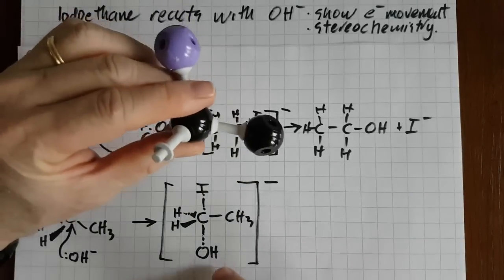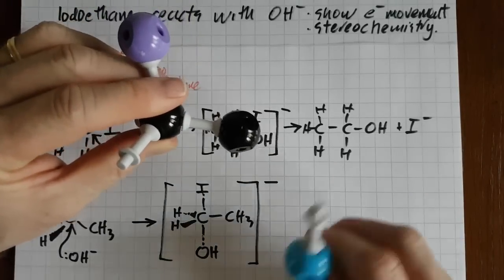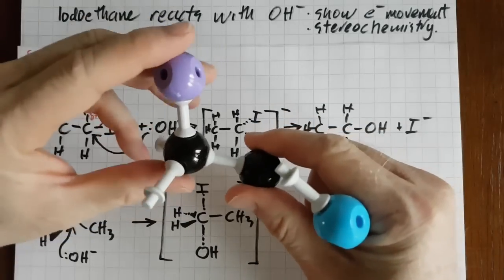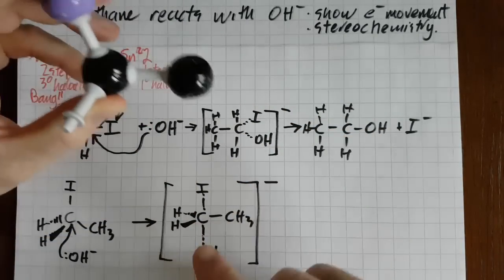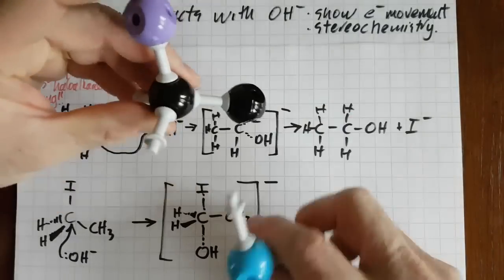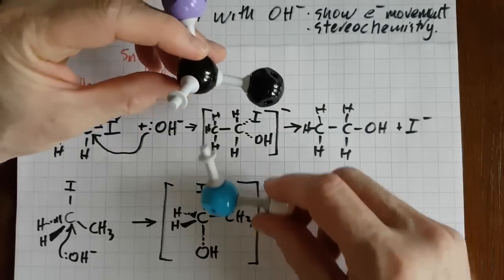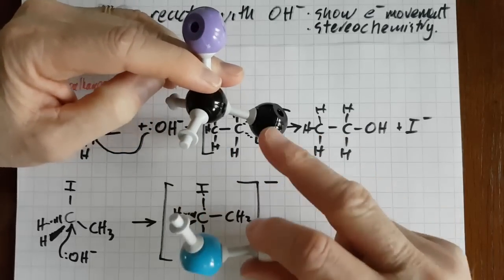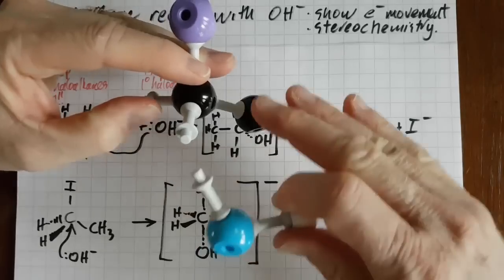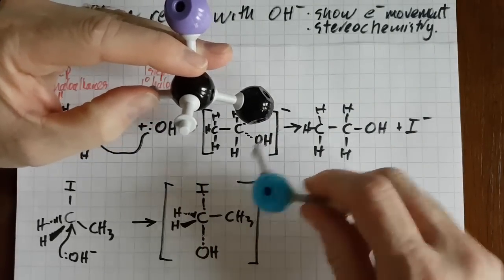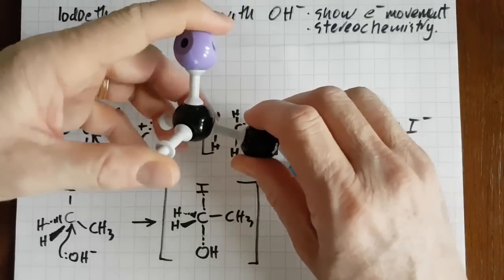So you do have to show this intermediate, this reaction intermediate. Again, square brackets, and I put the minus sign, dotty lines too. But now I've tried to show it in 3D. So as this hydroxide ion comes up there, then these three equatorial will move up to become at 90 degrees. So these three will flex up.